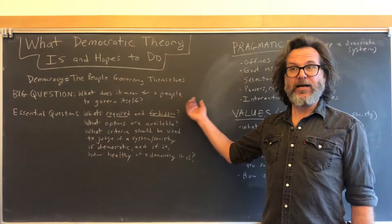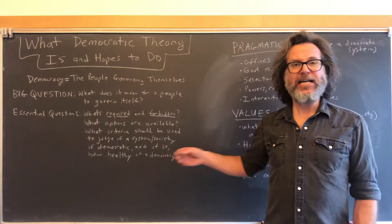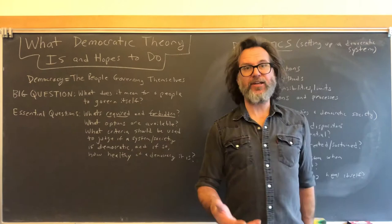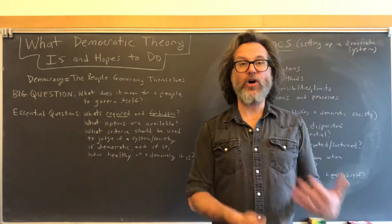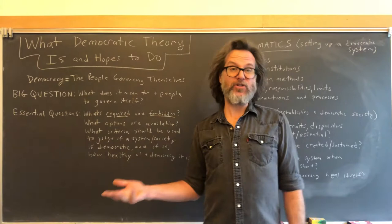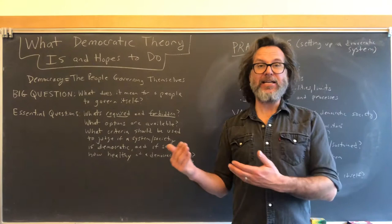That is hard to answer. Here are some essential questions that get us finer-grained into our investigation. What's required and forbidden? For the people to govern themselves, there are bound to be certain necessary conditions — if you don't have them, you don't have a democratic system. And there are things that if present make it anti-democratic or non-democratic. There is a difference: anti-democratic means something that works against democracy, while non-democratic means something that neutrally just doesn't further democracy.